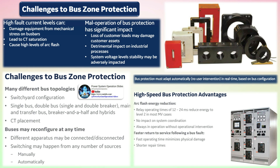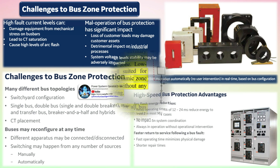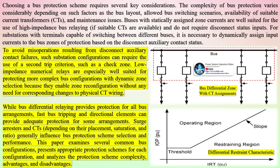To avoid misoperations resulting from disconnect auxiliary contact failures, such substation configurations can require the use of a second trip criterion, such as a check zone. Low impedance numerical relays are especially well suited for protecting more complex bus configurations with dynamic zone selection because they enable zone reconfiguration without any need for corresponding changes to physical CT wiring.